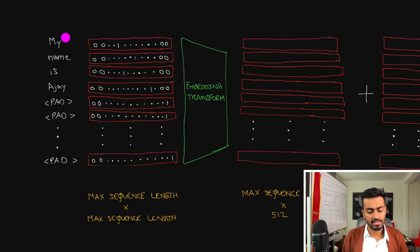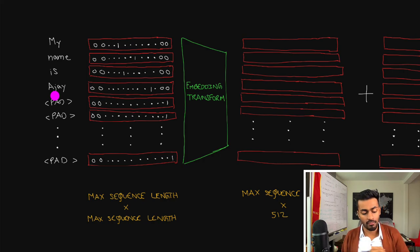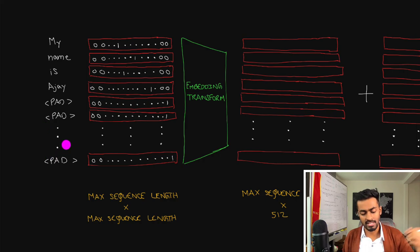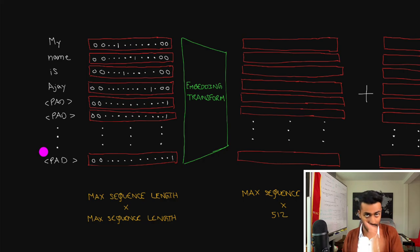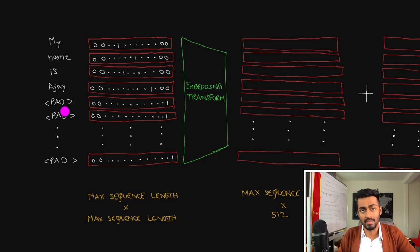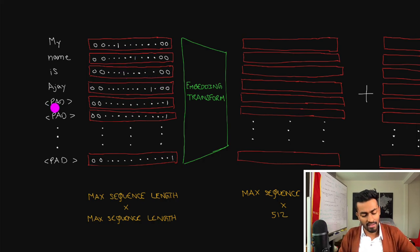We first have the input sentence 'My name is AJ.' Typically when training the network, we add a padding token — basically a dummy set of tokens so we have a consistent input even though the number of words may change. We always pass a fixed number of vectors through the transformer. Each word is encoded into a one-hot vector, where the corresponding token position is one and all others are zero — the same for name, is, AJ, and the padding tokens.